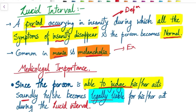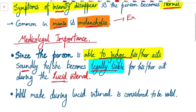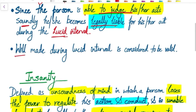During the lucid interval, the person becomes legally liable for his or her acts or crimes, as the insanity disappears for that period. A will — in Hindi, 'vasiyat' — made during a lucid interval is considered to be valid.